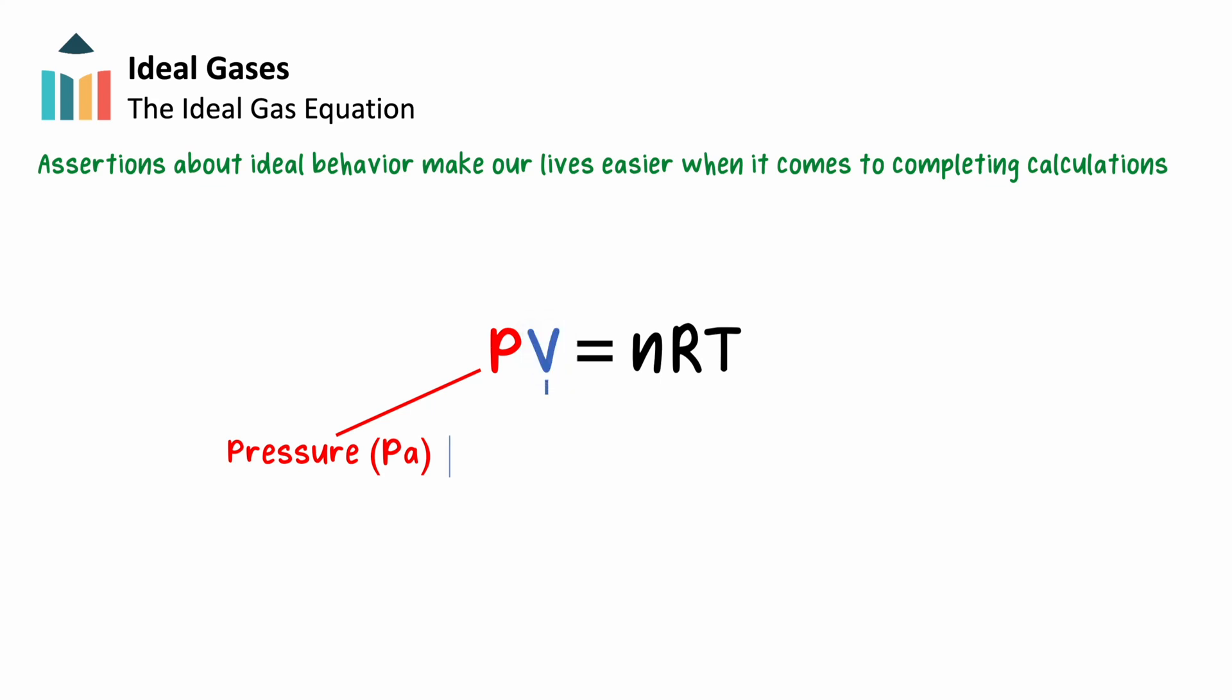Volume, V, is the volume of the container measured in meters cubed. Moles, n, is a way for us to count the number of gas particles. And temperature, T, represents the energy of the particles and is measured in the unit Kelvin.